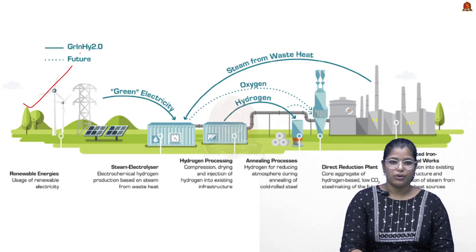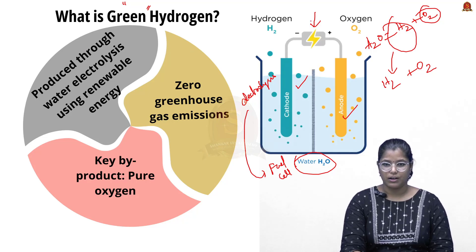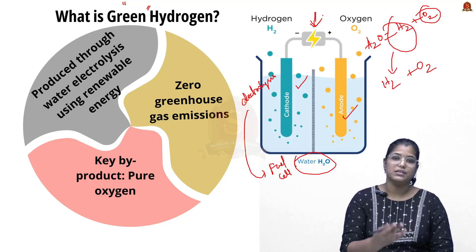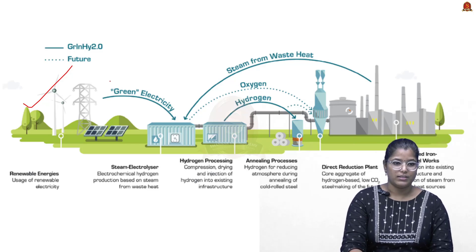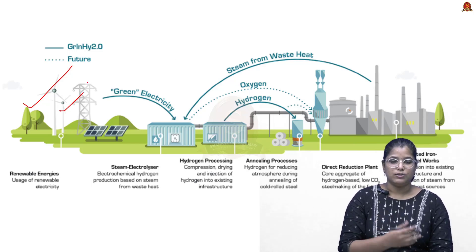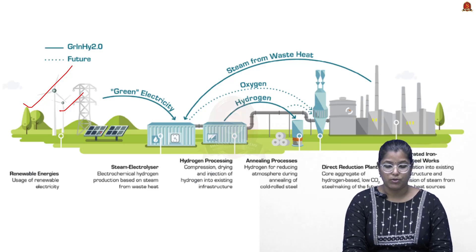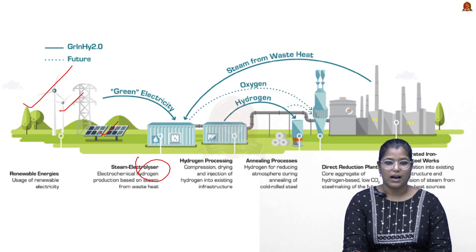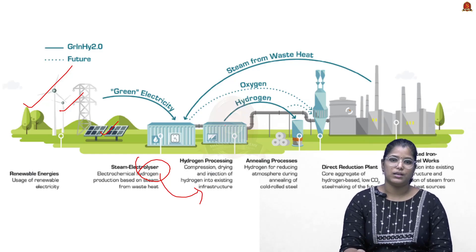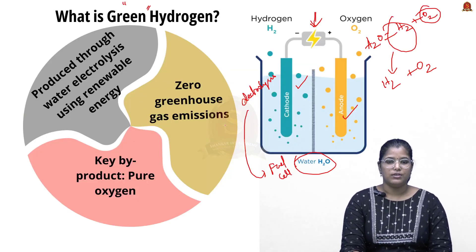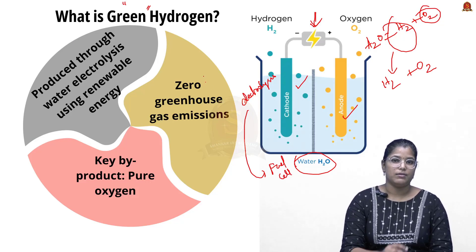You might wonder: where does the electricity for the fuel cell come from? That is where renewable energy comes into play. Renewable energy includes wind energy, tidal energy, and solar energy. This green electricity is passed through an electrolyzer, then a hydrogen processing unit separates the hydrogen, which is stored in liquid or gas form and used in different fields.